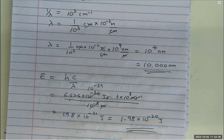If you multiply 1.98 (essentially two) times 6.022 (essentially six), you get around 12. And doing the exponents — 10 to the minus 20 times 10 to the 23 — they cancel out to give something around 12 kilojoules per mole.